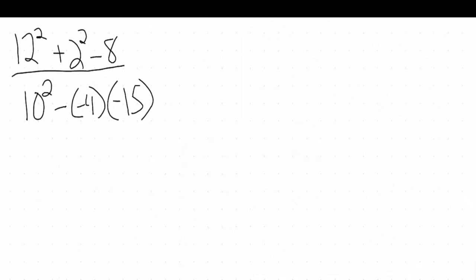Our next order of operations example is in fractional form. The main important thing to remember about these kinds of examples is that we're going to treat the numerator and the denominator almost as if they were their own problems. We'll work on simplifying everything in the numerator, then everything in the denominator, and our last step is to divide the numerator by the denominator. Let's start working on the numerator.